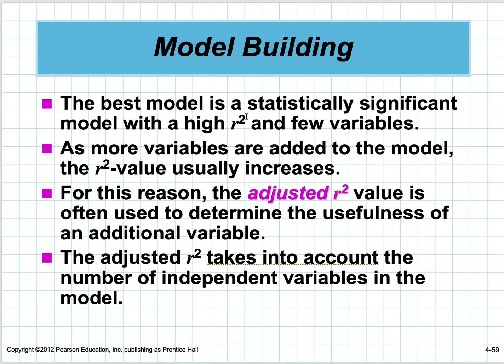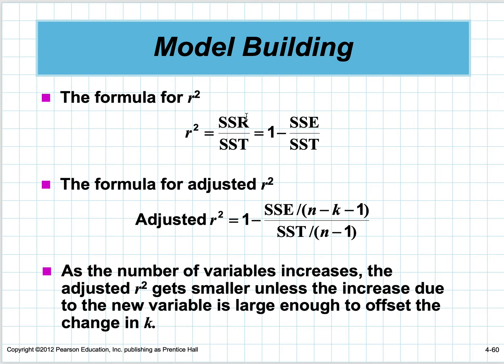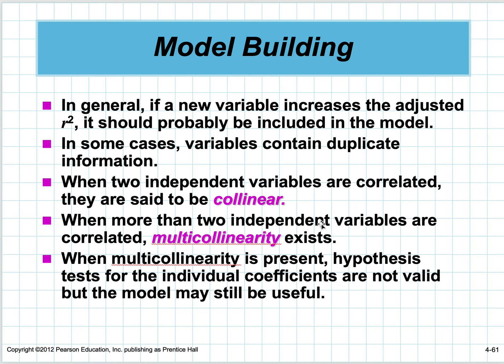Model building: the best model is a statistically significant model with a high R-squared and few variables. The more variables are added to the model, R-squared usually increases because you're adding more data. For this reason, the adjusted R-squared value is often used to determine the usefulness of an additional variable. The adjusted R-squared takes into account the number of independent variables in the model.